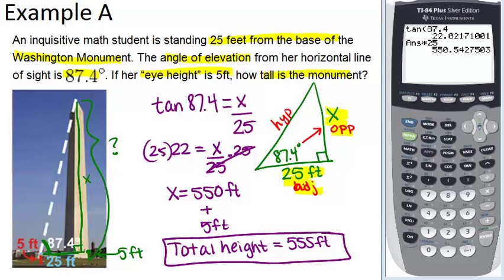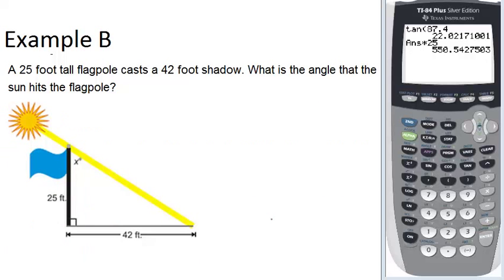All right, let's look at example B next. A 25-foot-tall flagpole casts a 42-foot shadow.